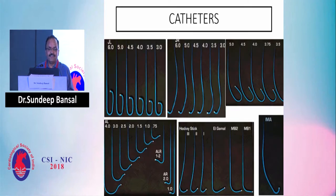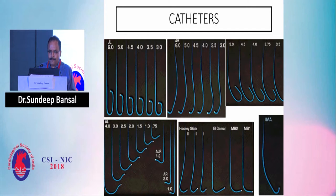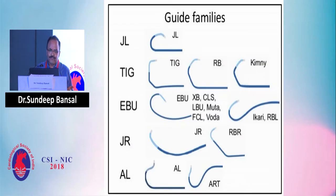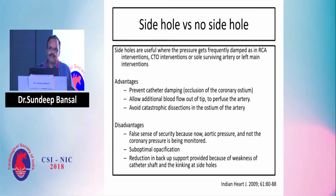Various types of catheters include Judkins left, Judkins right, extra backup, Amplatz left, Amplatz right, hockey stick, multipurpose, and single IMA catheter. Guides with side holes are particularly useful in right coronary cannulation, where damping may occur due to proximal obstruction. In that case, we use catheters with side holes.